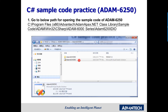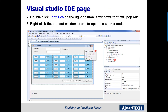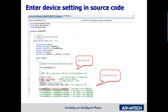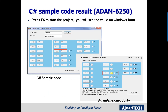Now let's see the sample code for the Ethernet module. Here we use the ADAN-6250 sample code as an example. Let's see how to use the sample code to connect to ADAN and get I/O values. First, go to the path shown below for opening the sample code. Second, in the Visual Studio IDE, follow the steps shown here. Last, we need to set several parameters to control ADAN, including the module's IP and module name. After setting all parameters, users can run the project and see the values on the Windows Form. The channel status from the sample code should match with the ADAN utility.